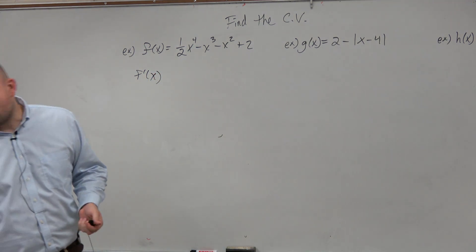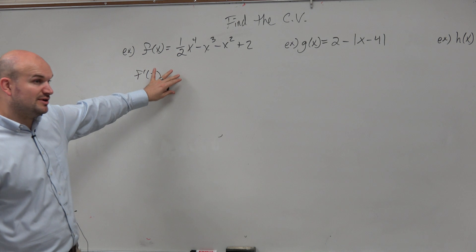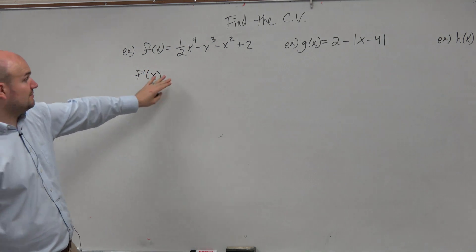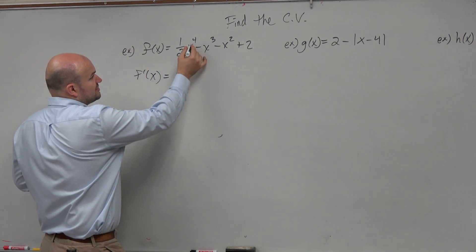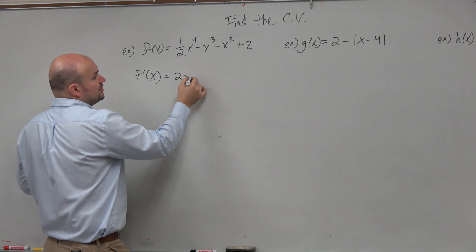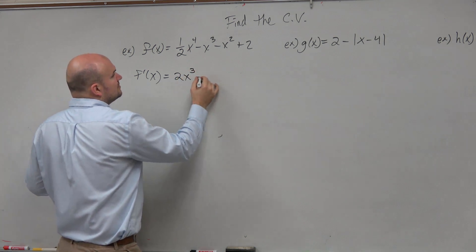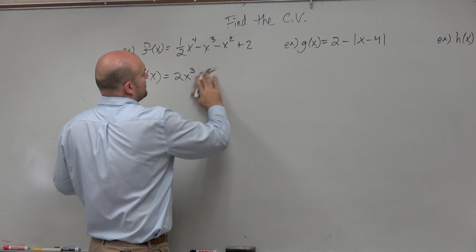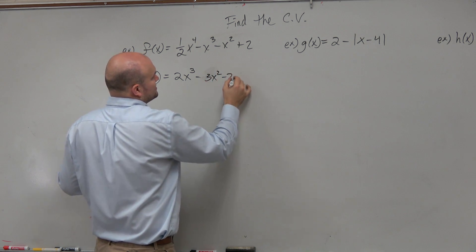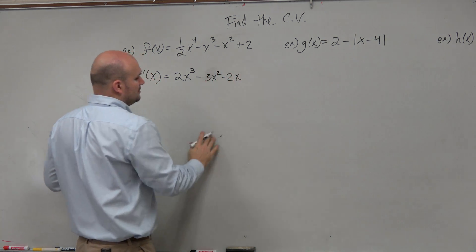But I did write down the problem wrong. I apologize for that. So if we want to find the critical values, first thing we're going to do is find the derivative, which in this case, bring down the 4. That's going to be 2x³ - 3x² - 2x.